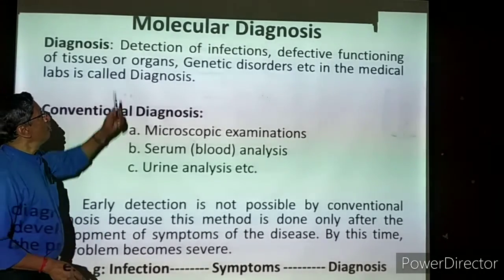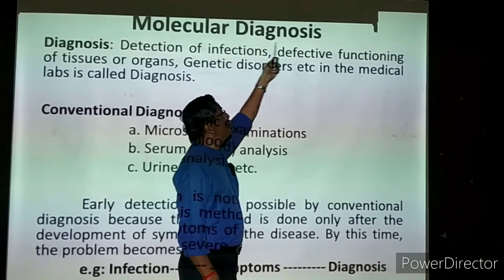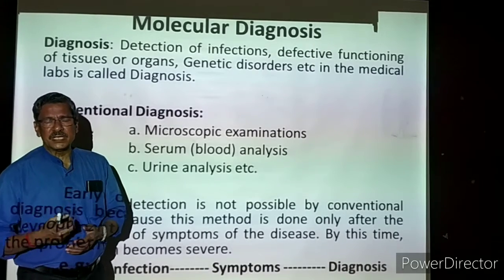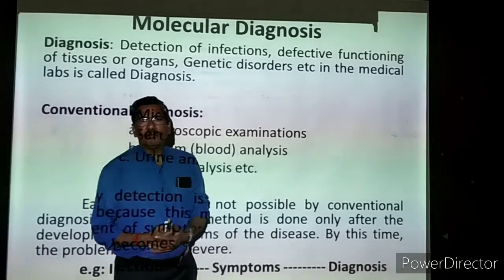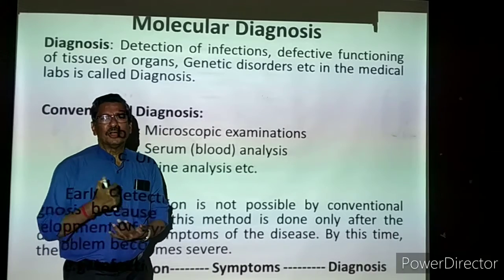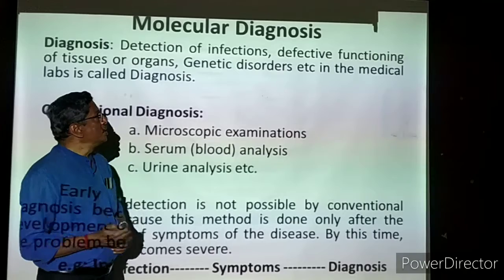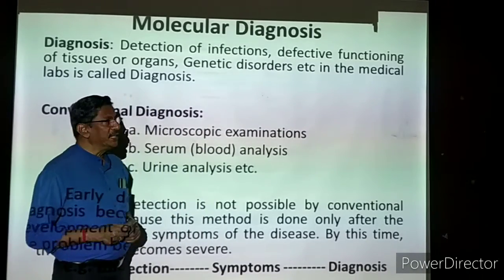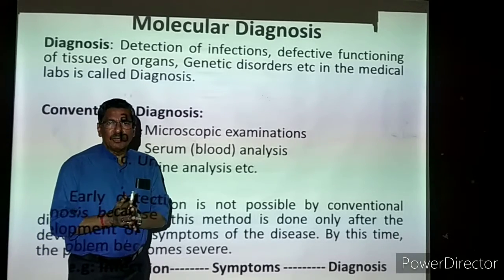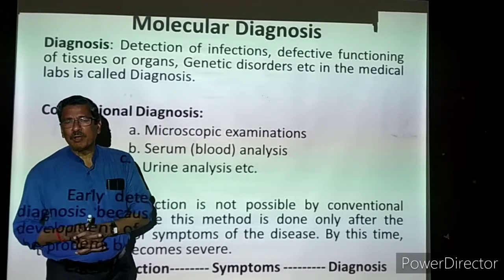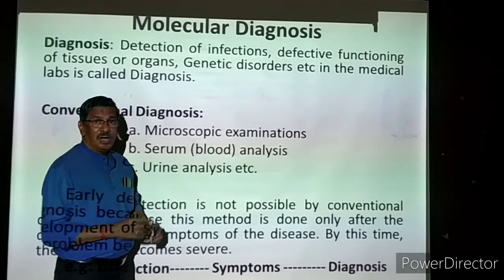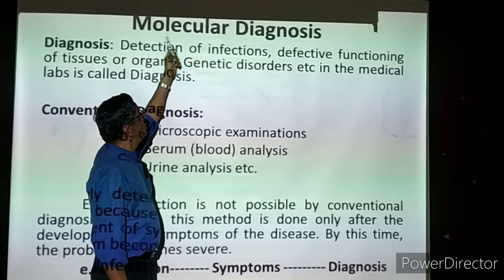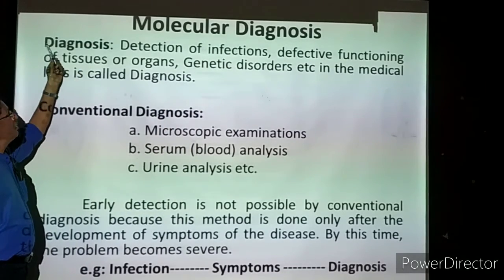The next topic is Molecular Diagnosis. First, we have to know what is the meaning of diagnosis. By lab testing, we identify the type of infection or the problems present in the body - that is called diagnosis. Whenever we have some problem, doctors may ask us to take a blood test or urine analysis. To find out certain problems or infections in the body - that is called diagnosis. Is there any defect in the individual's body? Molecular means the diagnosis is based on the molecular level.